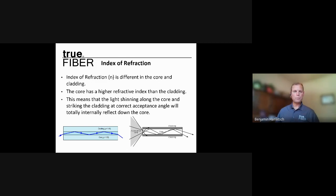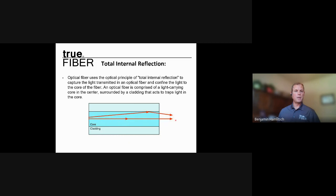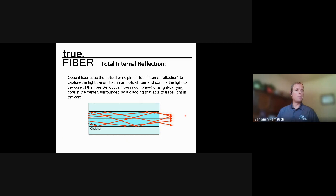Total internal reflection is the term for how light is transmitted down an optical cable. Because the core has a different index of refraction than the cladding, light transmitted through the core reflects down the fiber optic cable. Total internal reflection captures and confines the light to the core of the fiber — that's a key component to what makes fiber optic cabling work.